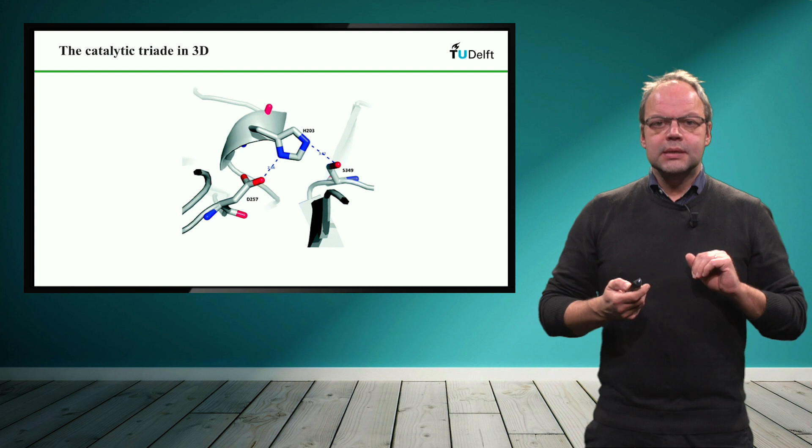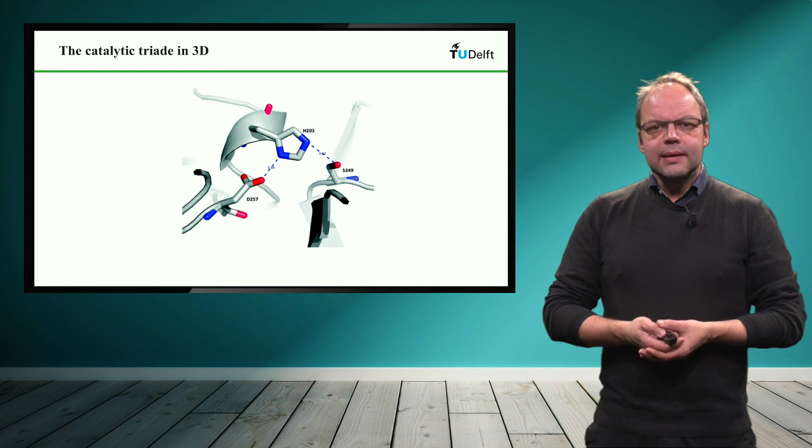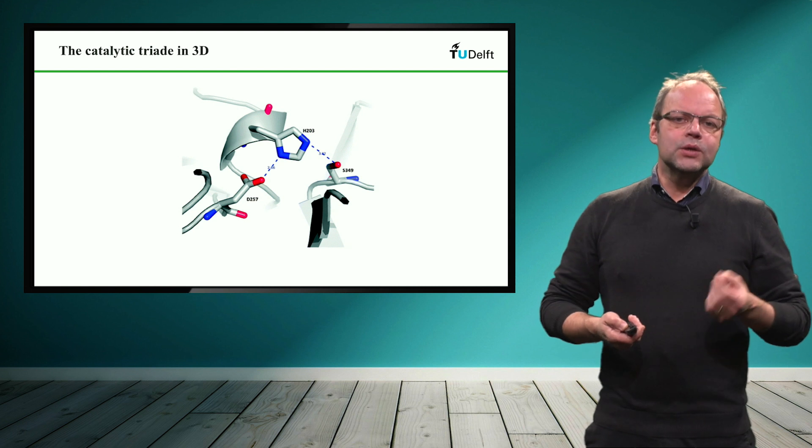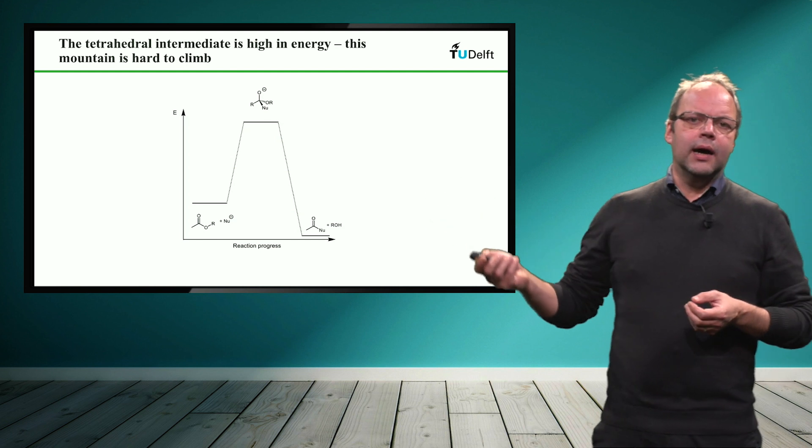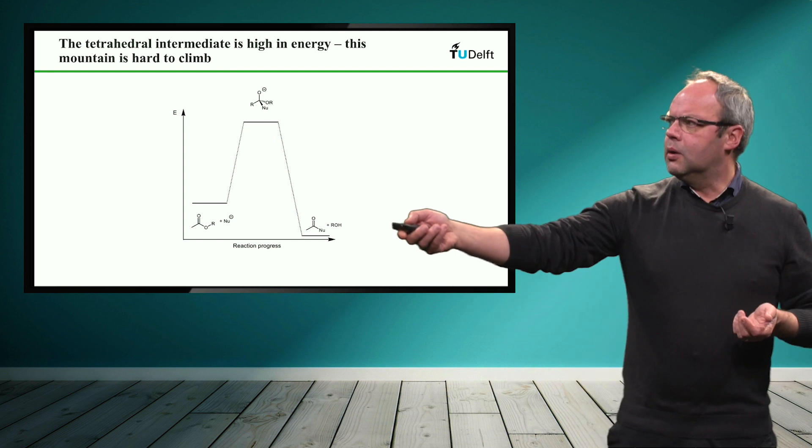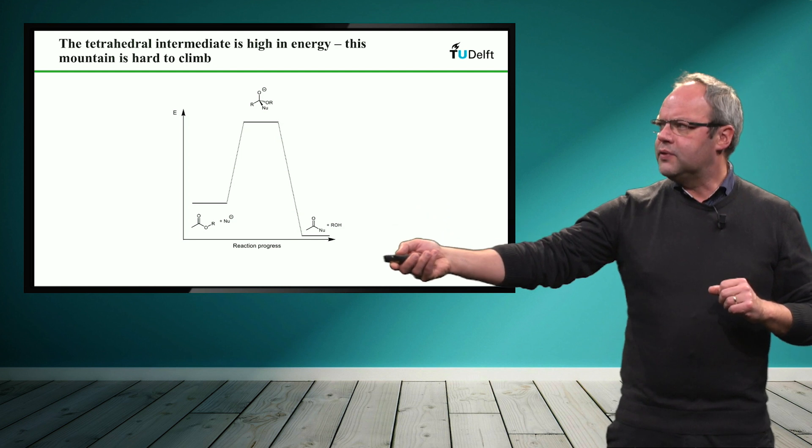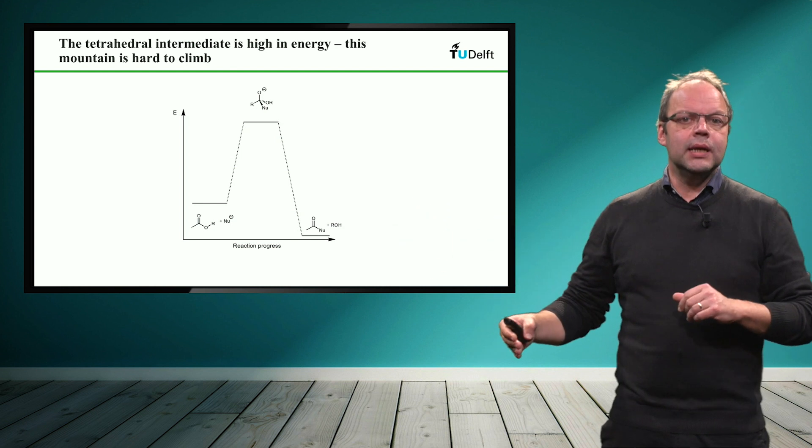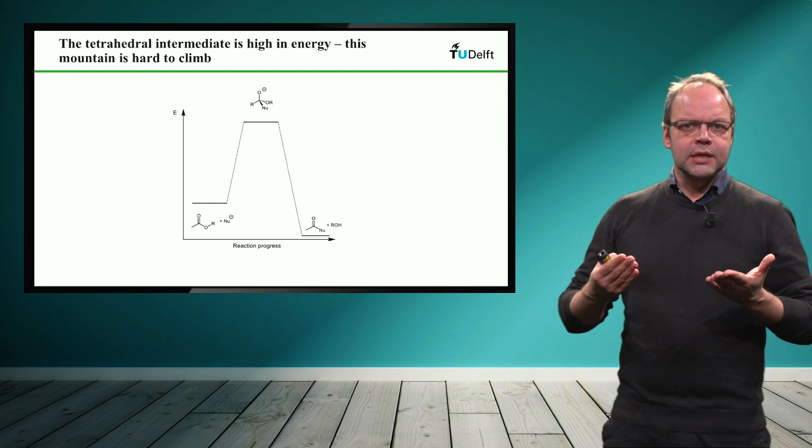I shortly want to discuss with you another catalytic mechanism and that is the so-called oxyanion hole. So what you see here is a typical energy diagram for catalysis. So we have the starting materials at a certain energy level. We have the products at a lower energy level. And in between we have the so-called transition state, which is usually very high in energy.